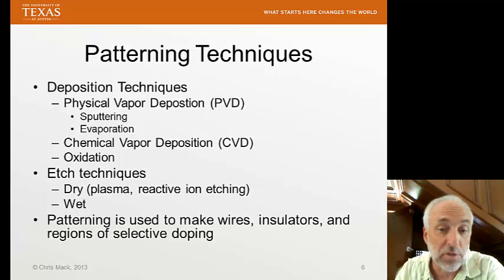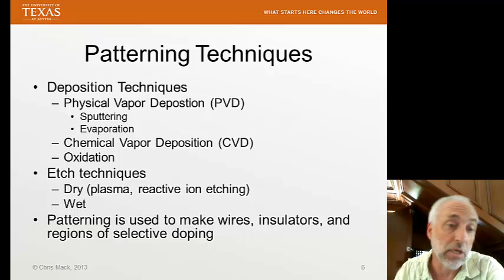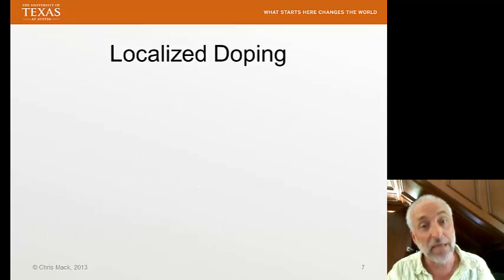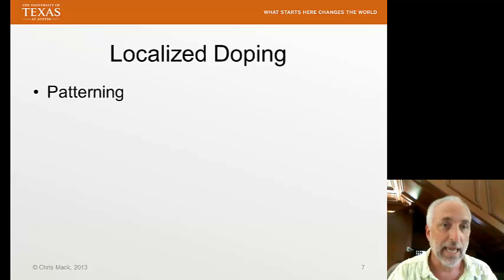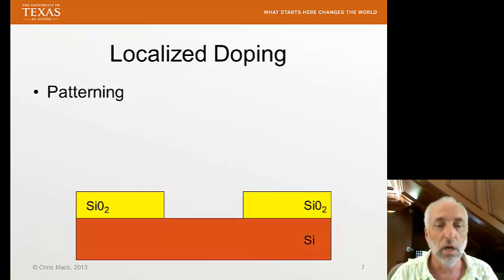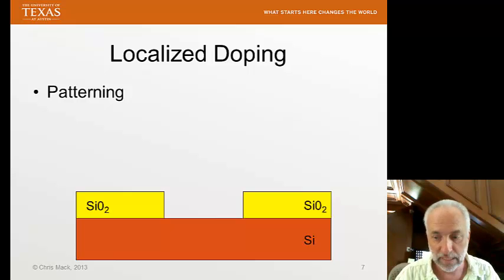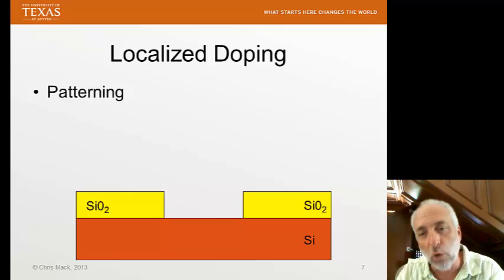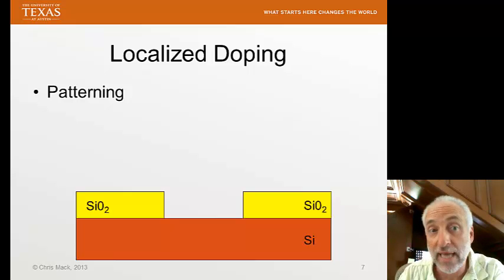This patterning is used to make our devices — regions of selective doping, transistors, wires, insulators around the wires, and ultimately all of the circuits that make up our chip. The other main processing step in making semiconductor devices is localized doping, which involves patterning. We begin with a patterning step — here we have a silicon wafer with some silicon dioxide regions on top. Then we apply doping by introducing a dopant material, something different than silicon that we're going to embed in the silicon wafer. The main method for doing that is ion implantation.